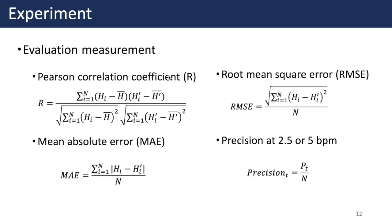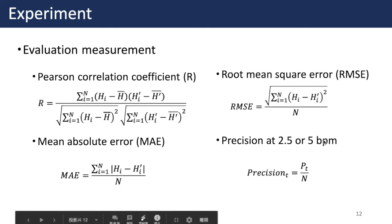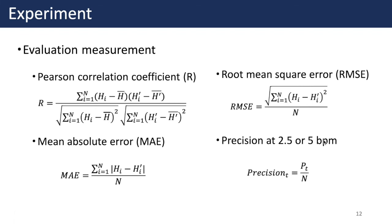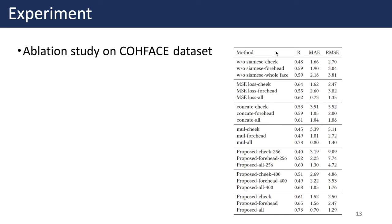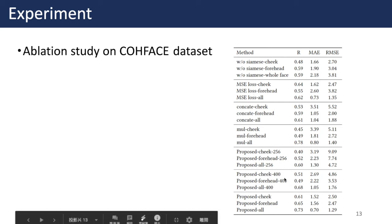To evaluate the performance of our model, we use the following metrics: Pearson correlation coefficient, mean absolute error, root mean square error, and precision at 2.5 or 5 BPM. In the formulation, H_i and H_i-hat denote the heart rate estimated from the predicted RPPG signal and from the ground-truth PPG signal, respectively. The table summarizes the ablation study of our method under different settings on the ColdFace dataset. Cheek and forehead refer to the output of their corresponding branch before the fusion step. O refers to the fused RPPG signal, and 256 and 400 are two settings of frame numbers, with the default setting being 600 frames.